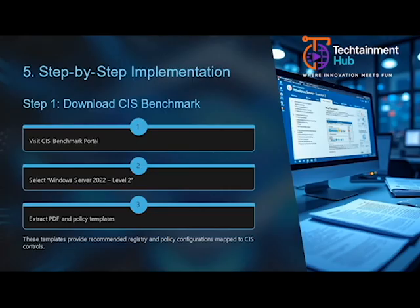Open Group Policy Management Console. Create a new policy named CIS WS 2022 IG3 and select Edit. This will serve as the main GPO for applying all CIS configurations across your domain.